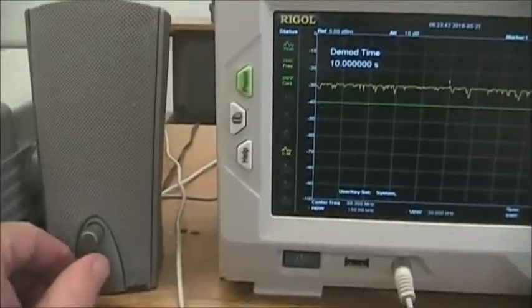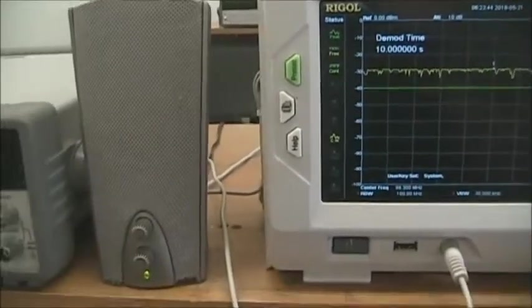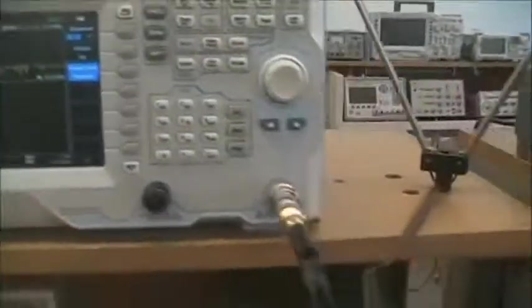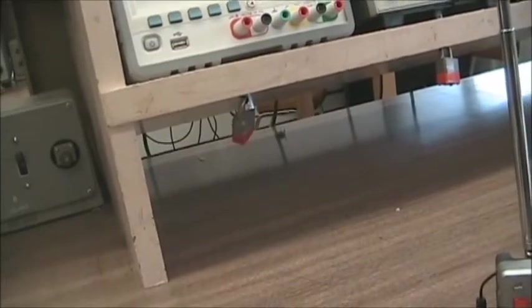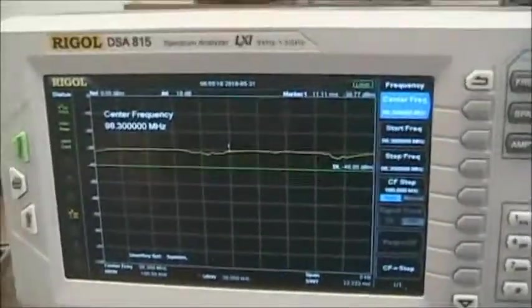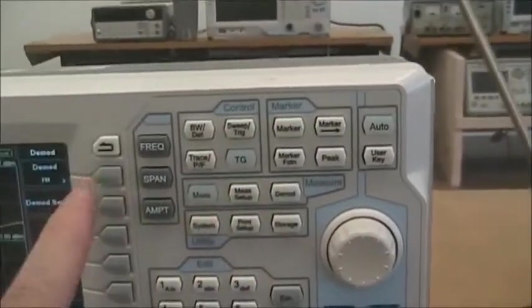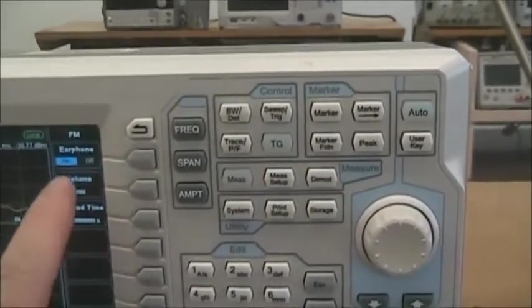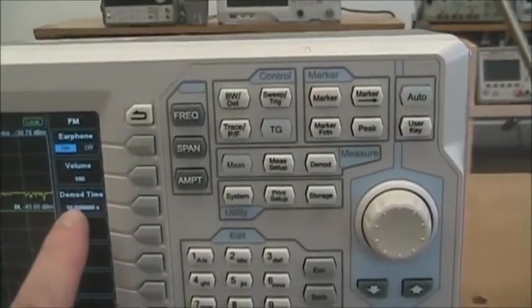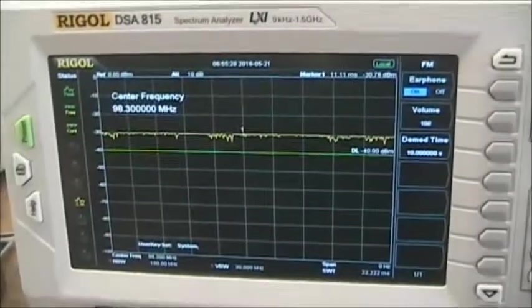And then we hear the signal, the FM channel. I can confirm that value by adjusting my radio here that I've got in the lab to 98.3. So we set the channel to 98.3 megahertz. Did all the demod functions, demod FM, set the time, the earphone on in 10 seconds. And then we hear the audio.